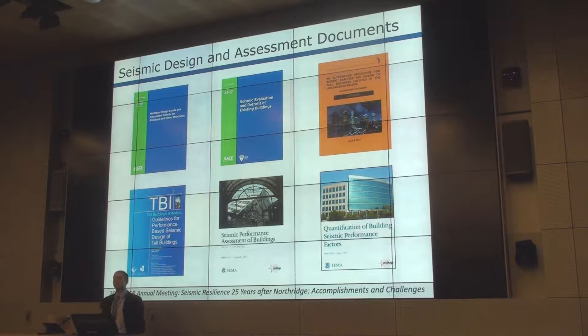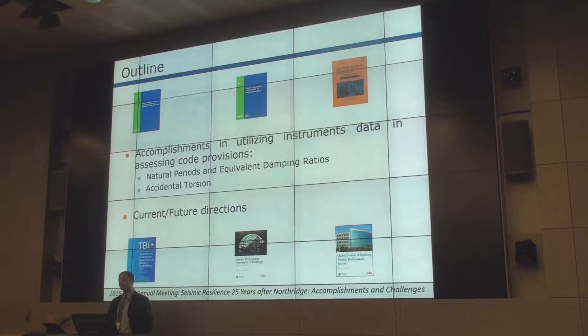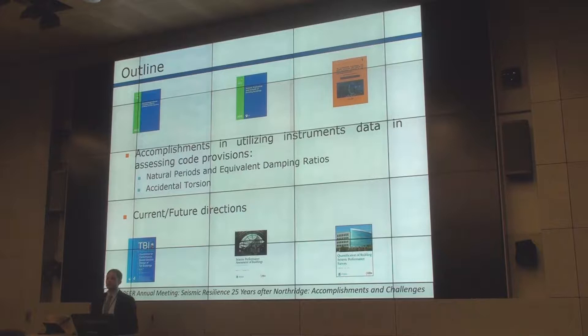As far as today is concerned, my focus would be on two things. Number one, the things that we accomplished at UC Irvine — specifically using instrumented building data to see how good, bad, or ugly damping and period assumptions are in ASCE 7. Also, we're going to look into the provisions for accidental torsion. Lastly, I want to talk about the future directions that we are moving forward in. I hope I can finish early and listen to your comments.